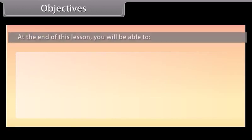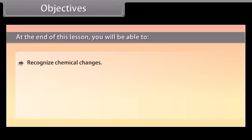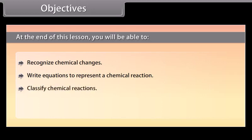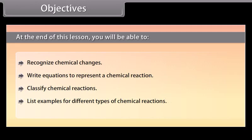Objectives. At the end of this lesson, you will be able to recognize chemical changes, write equations to represent a chemical reaction, classify chemical reactions, and list examples for different types of chemical reactions.